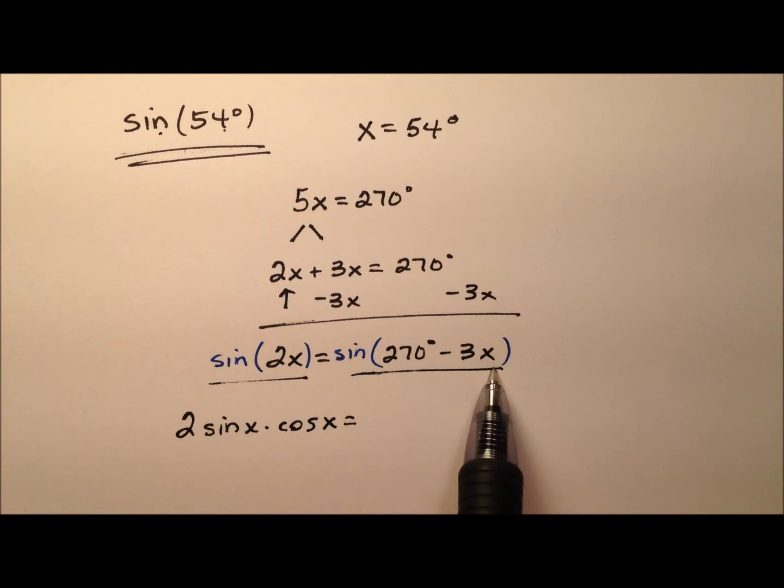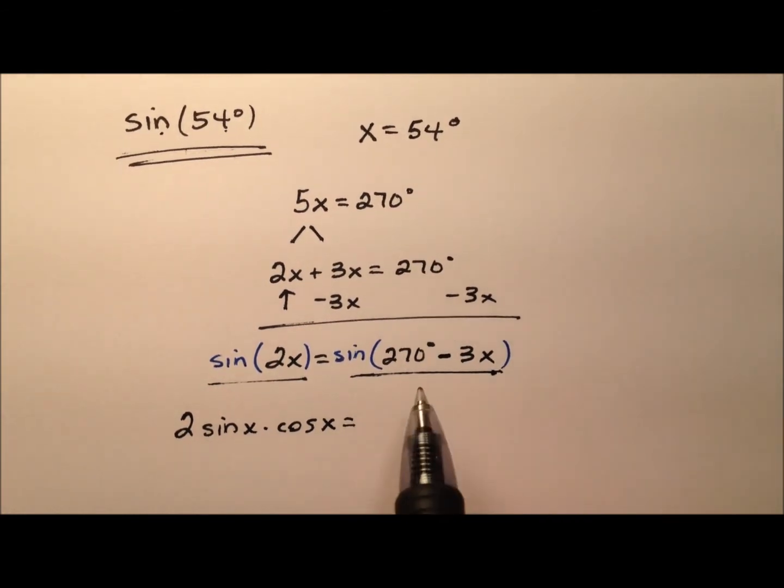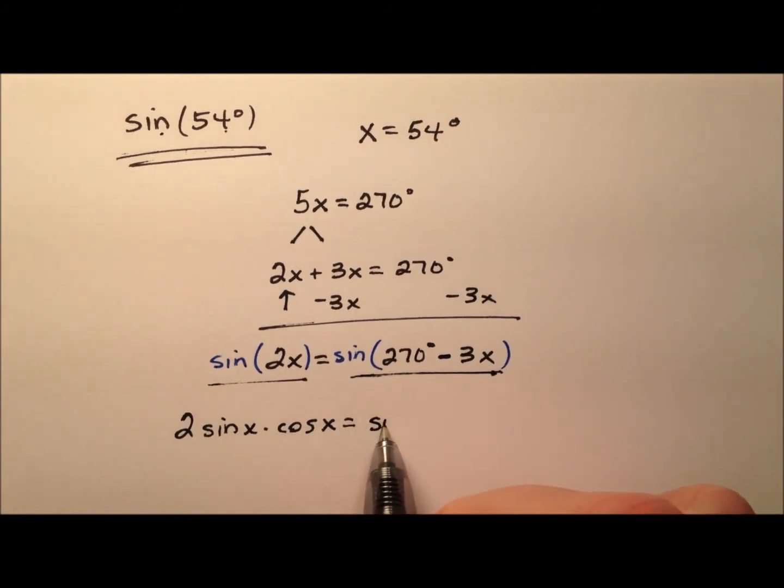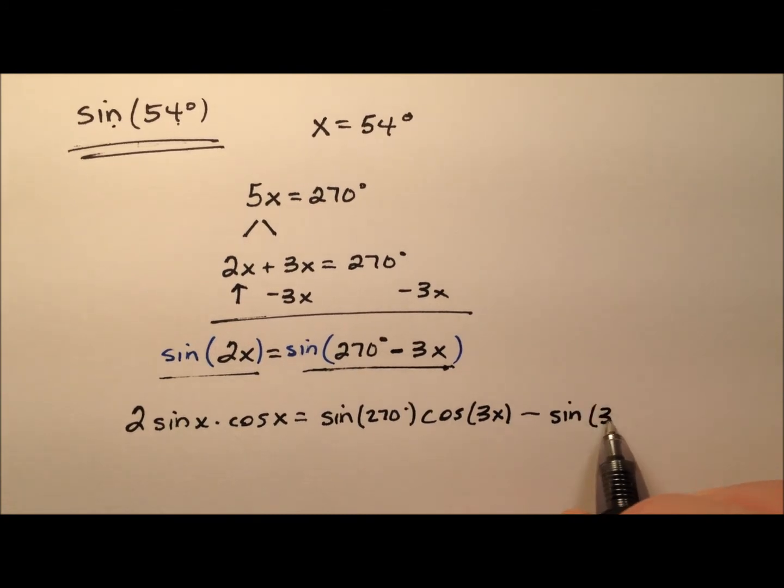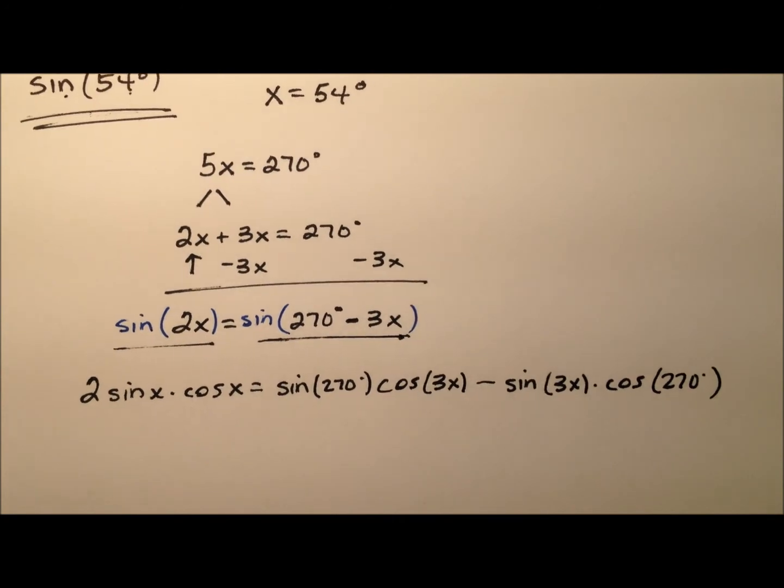And then on the right side, it looks like I have the difference formula or the difference identity for sine. So I'm going to expand that. So it's going to be the sine of 270 degrees times the cosine of 3x minus the sine of 3x times the cosine of 270 degrees.